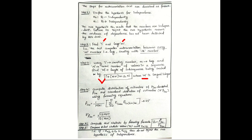Once the subsequence of random numbers to be tested is identified, in Step 4 we compute the distribution of the estimator, cap rho_iM, and the standard deviation of the estimator, sigma rho_iM, using the corresponding equations. In Step 5, we compute the test statistic value Z0 = cap rho_iM divided by sigma rho_iM.